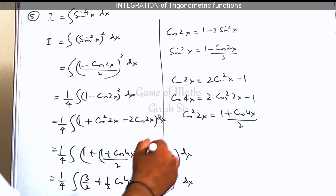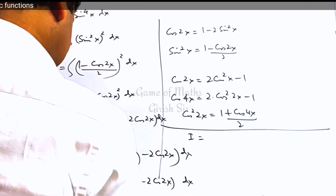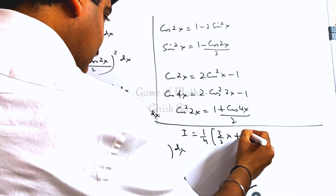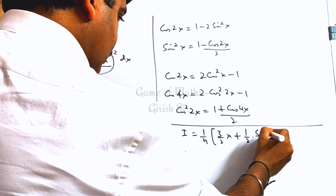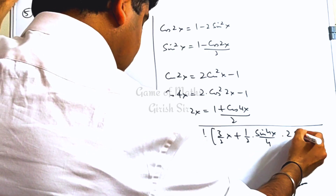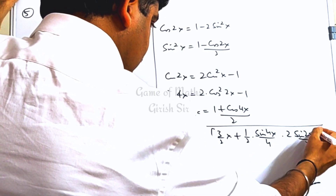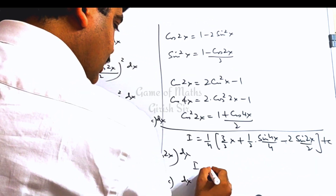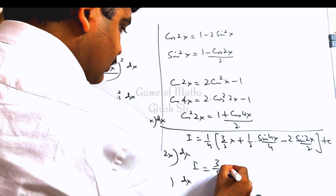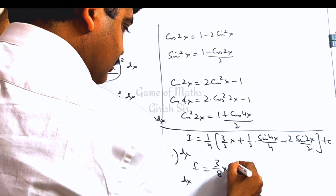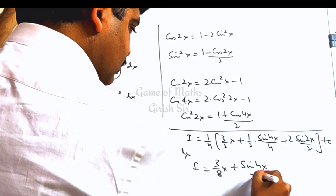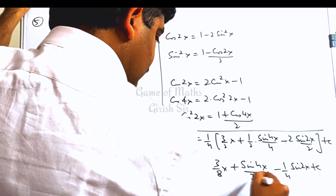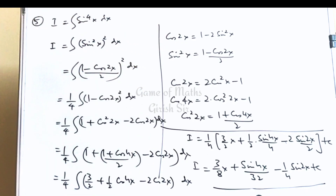Now let's integrate further. Integrating all terms gives us the final answer: (3x/8) minus (sin 2x)/4 plus (sin 4x)/32 plus c. This would be the answer to the given question.